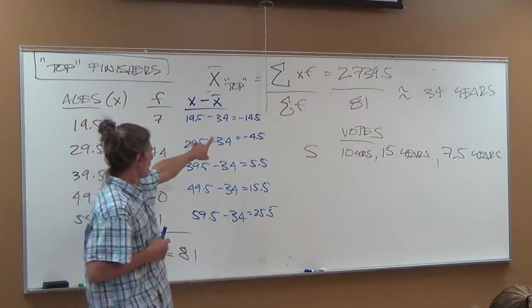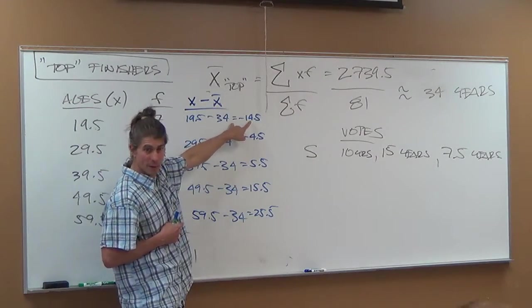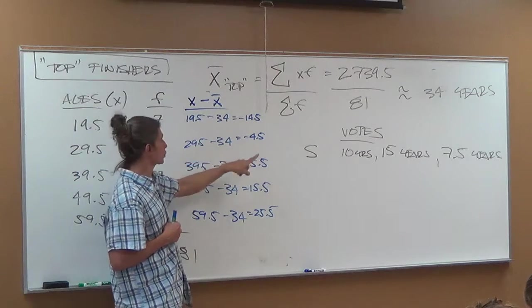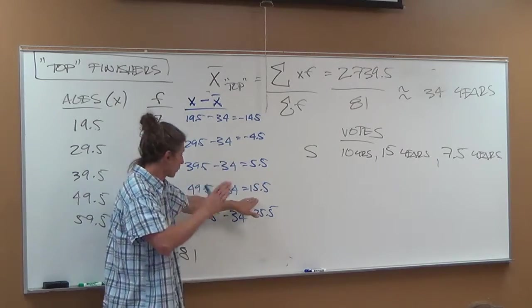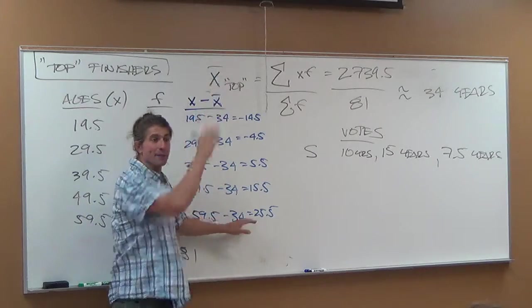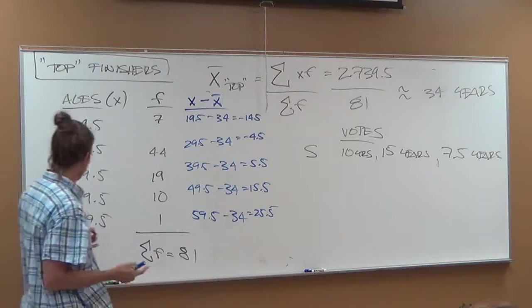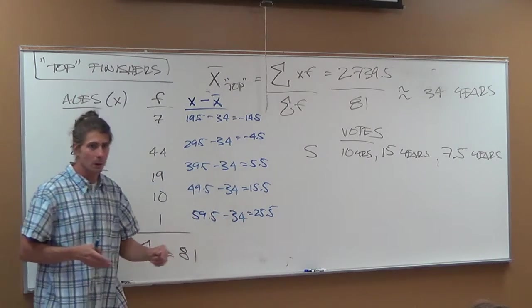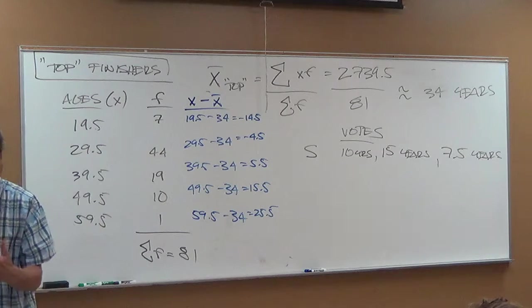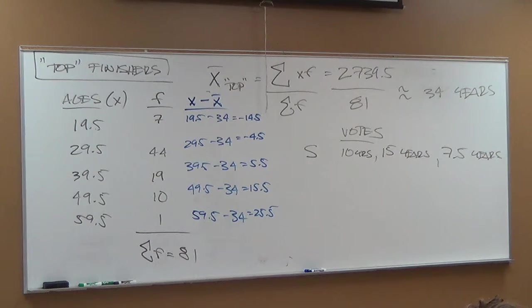So these ages are 14.5 years down from average, 4.5 years down from average, 5.5 years up from average, 15.5 up, 25.5 up. 59.5 is above average, it's that far above average, 25.5. Ask questions if you're coming up with questions right now. I want to answer your questions as we're doing this. I don't want this to seem like magic.